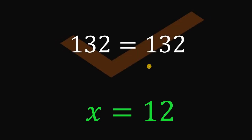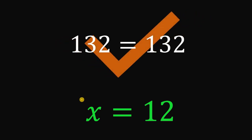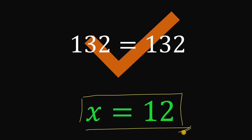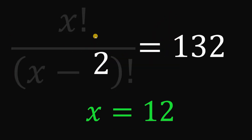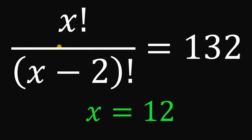Therefore, they are equal. We can confirm that the value of x satisfying x factorial over (x minus 2) factorial equals 132 is x equals 12. And as always, we are done.